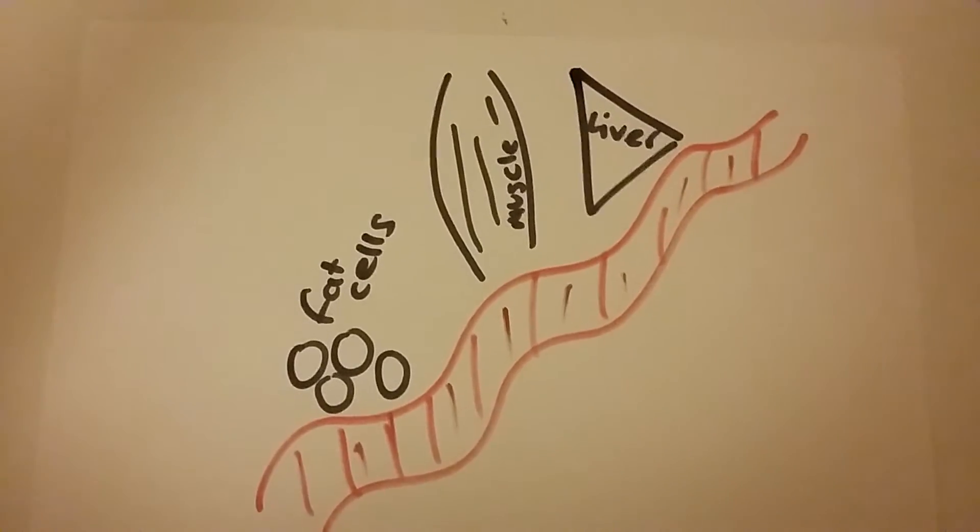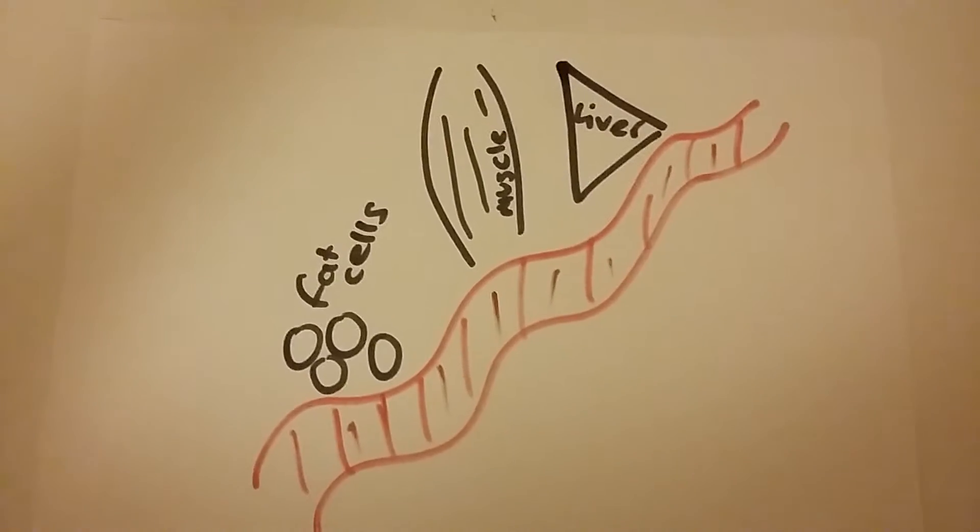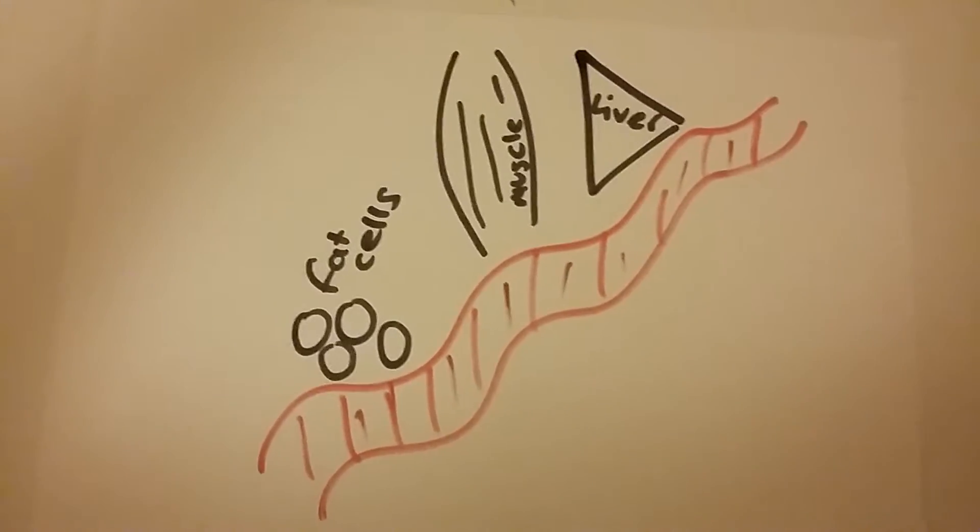What is insulin and what does it do in the body? Insulin is a hormone and as a hormone it's part of our endocrine system.